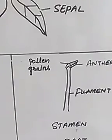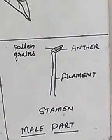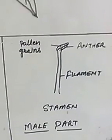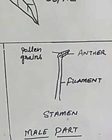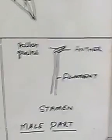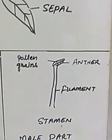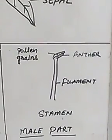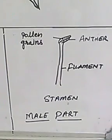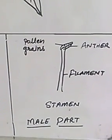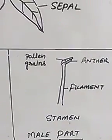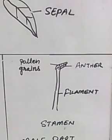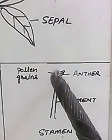This is the diagram of stamen — this whole part we call stamen. This cylindrical part is called stamen and it is the male reproductive part of the flower. Each stamen consists of a thin green stalk called the filament — this long cylindrical part is the filament.